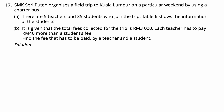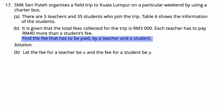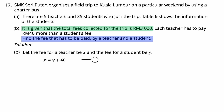Question 17B. The total fees collected for the trip is RM3,000. Each teacher has to pay RM40 more than a student's fee. Let the fee for a teacher be x and the fee for a student be y. Since x = y + 40 (Equation 1), and 5 teachers plus 35 students gives 5x + 35y = 3,000 (Equation 2).